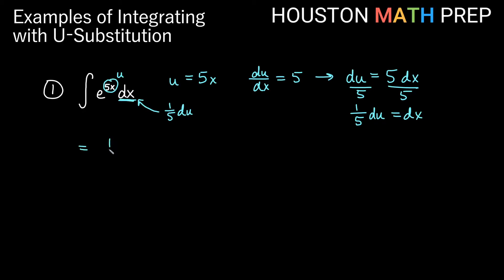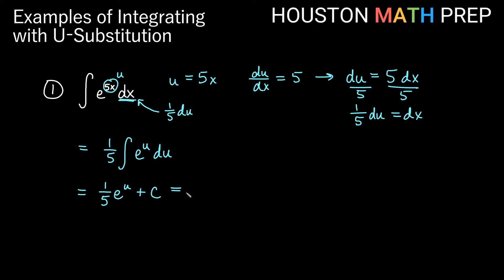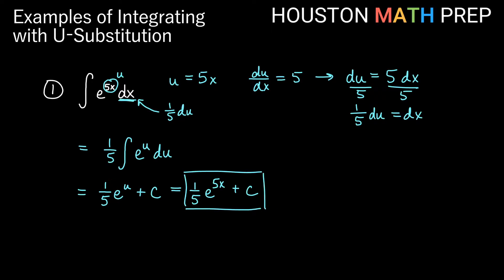Let's go ahead and make that replacement. I'm going to put my 1/5 out front as a constant multiple, and we'll have the integral of e to the u du. Remember to put your du at the end. We know the integral of e to the u is itself, so we get 1/5 e to the u, plus our constant. Don't forget that. Now we go back and replace our u. Our u was 5x, so the final answer is 1/5 e to the 5x plus C.